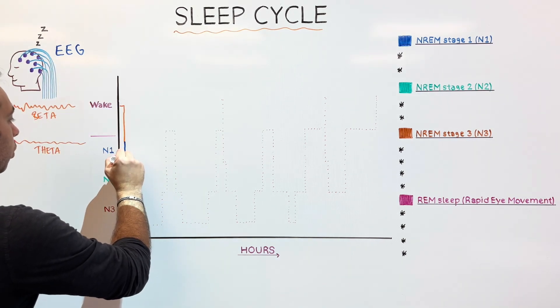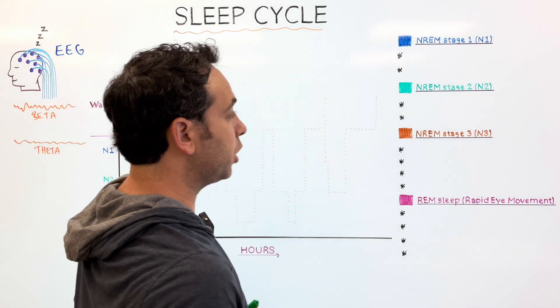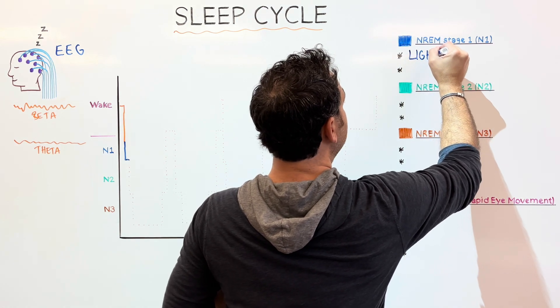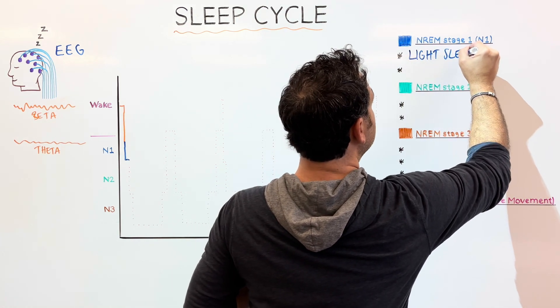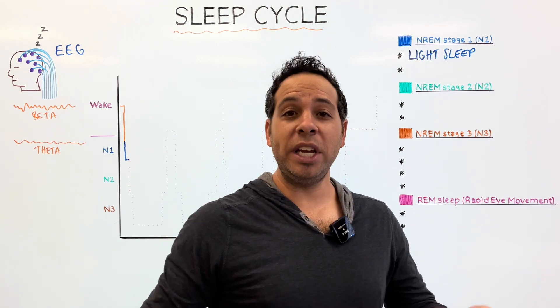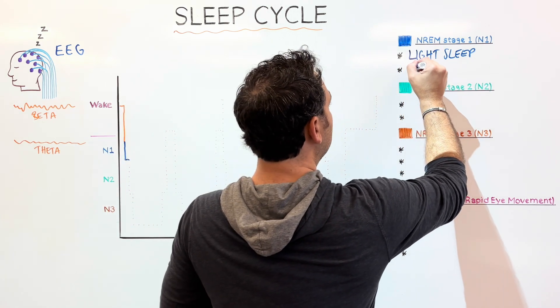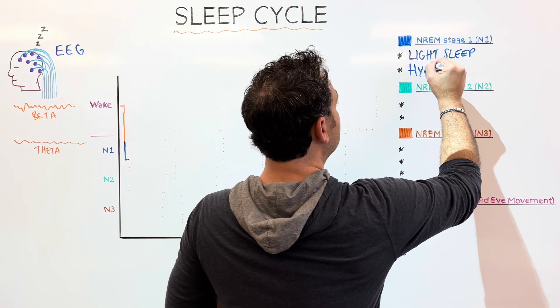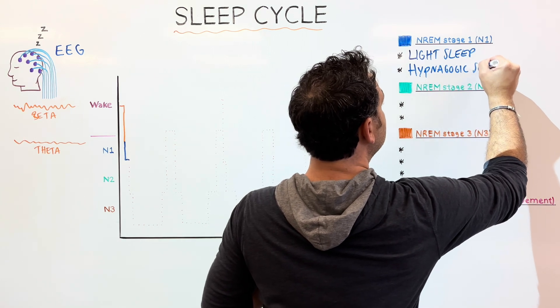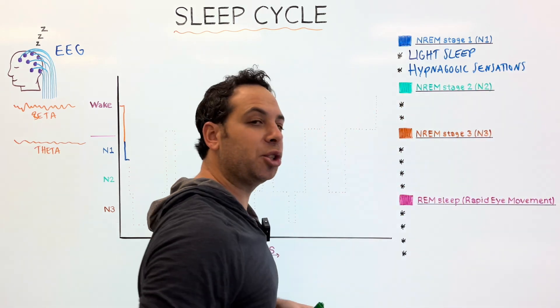We'll color code this as stage one. Two reasons. One, we see theta waves, but also what we know about the description. In non-REM 1, we consider this light sleep. Do you ever go to sleep and you're like, was I sleeping? Was I not sleeping? It's so light, we don't even know whether we're sleeping or not. It's easy to wake up. And what's also occurring is a big phrase called hypnagogic sensations.